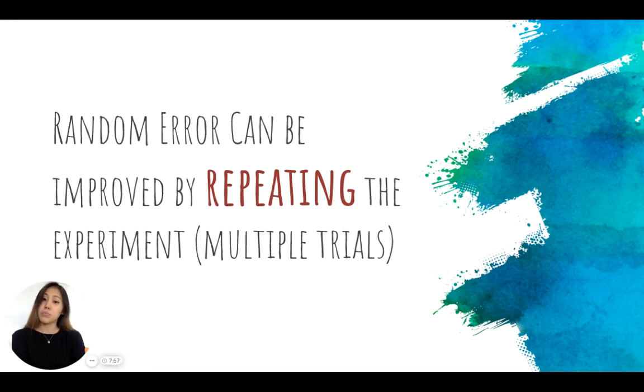Random error can be improved by repeating the experiment. This means the more trials you do, the more trials you run, the more accurate your results could be and the more it would actually reflect what it should be. Random error can be caused by a variety of different ways, like what we've seen just now. So if you repeat the experiment, then that reduces the chances of a lot of those parallax errors or temperature variations from happening.